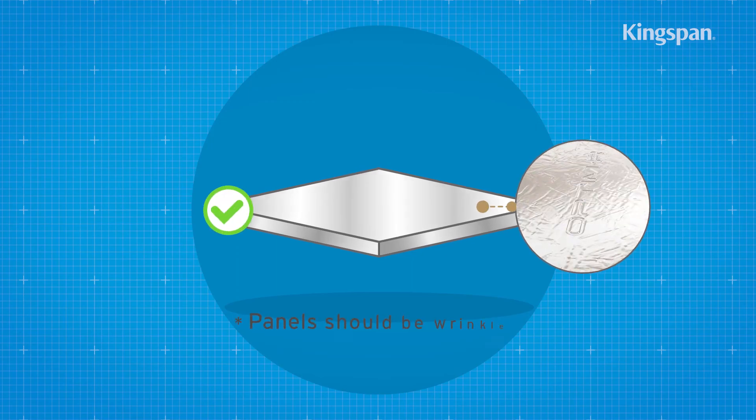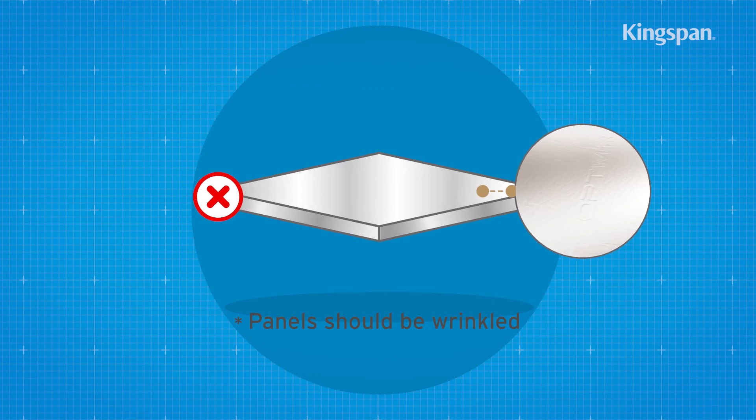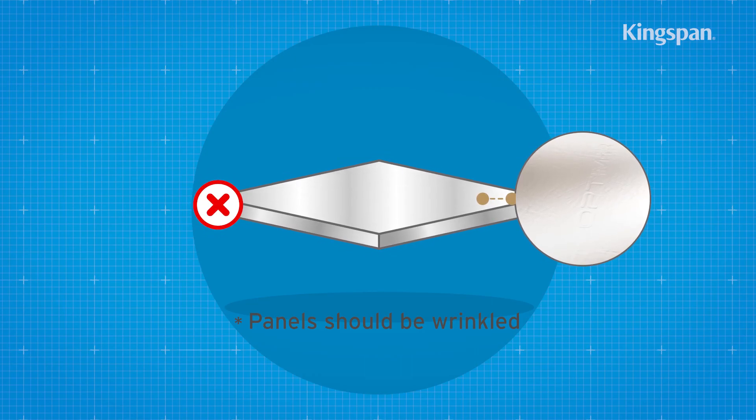The panel surface should look wrinkled. If it looks smooth, then air has entered the insulation and the thermal performance will not be as good.